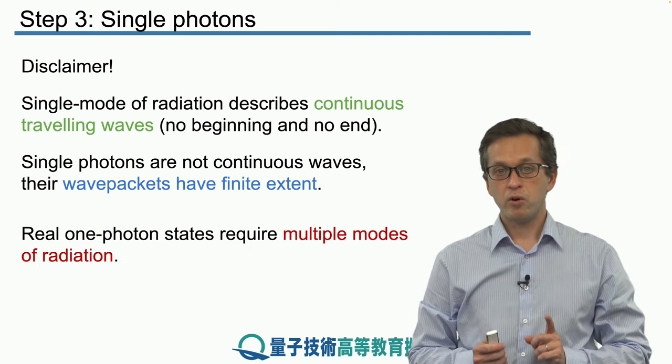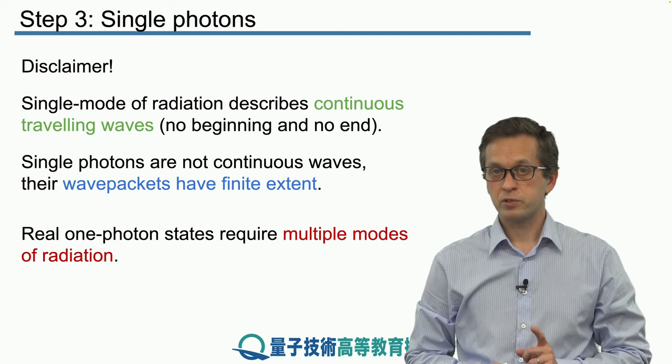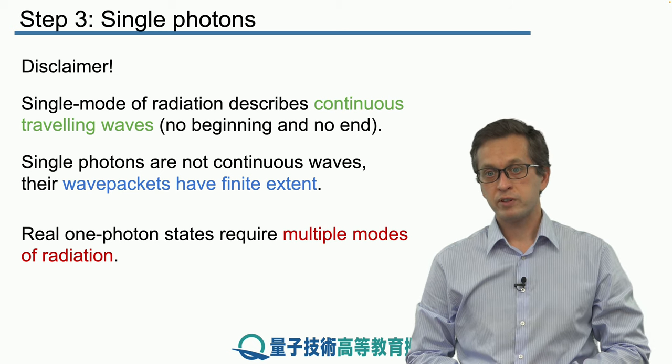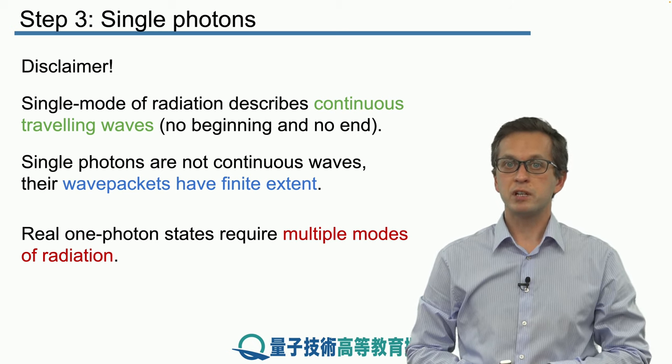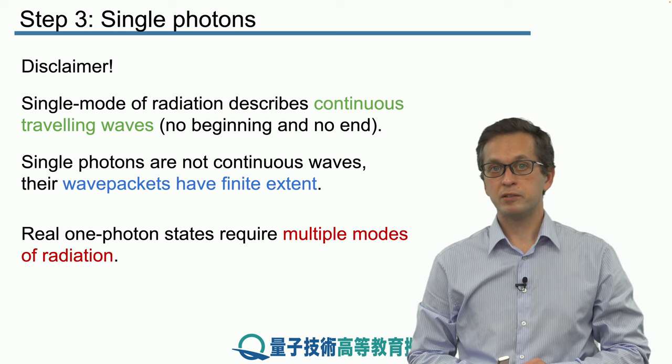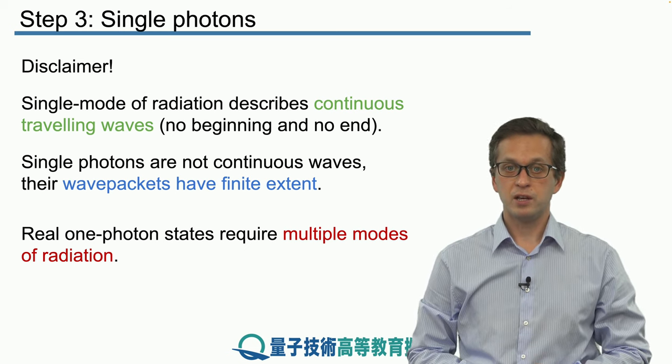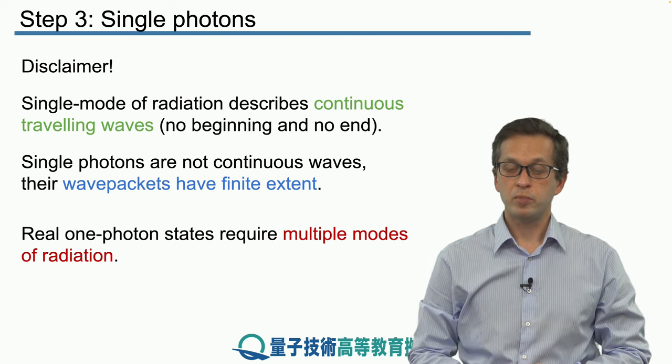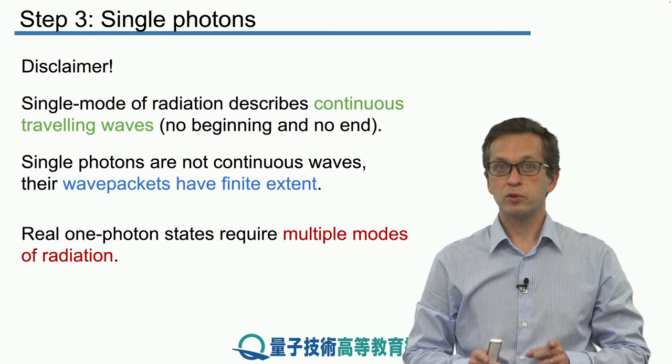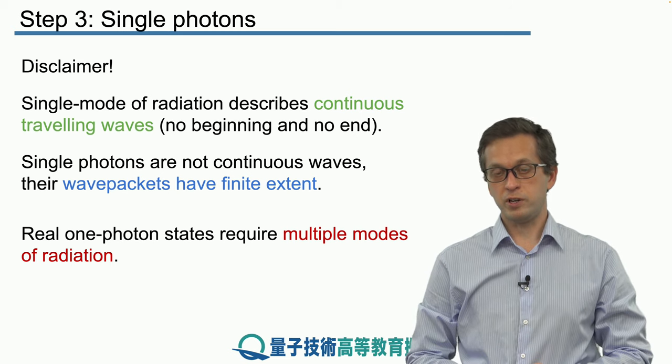So in order to have a realistic description of a single photon, we must include many modes of the radiation. However, for now we're going to content ourselves with just this toy model, just to demonstrate how we can manipulate a single mode of radiation. And later in this module we will become more realistic in our description and introduce the notion of a realistic single photon state using multiple modes of radiation.